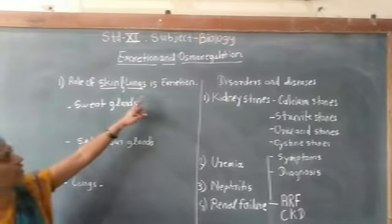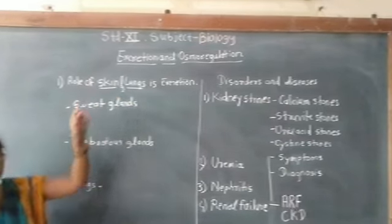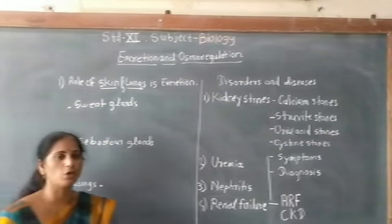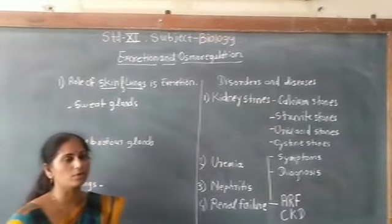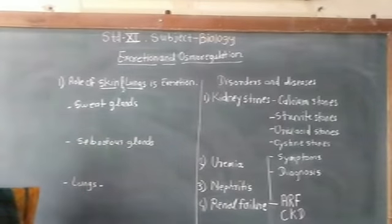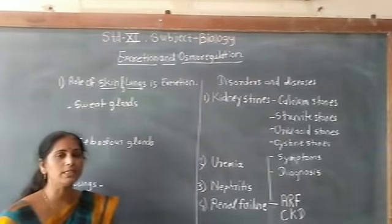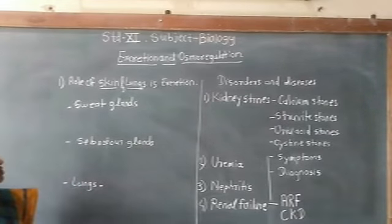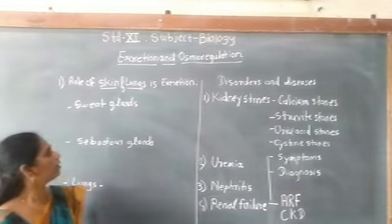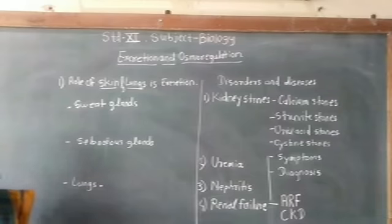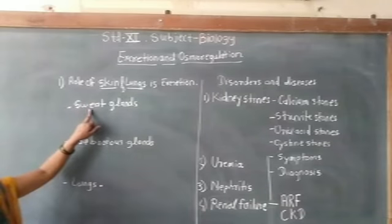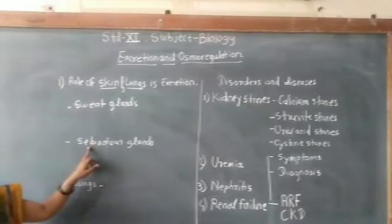The role of skin in excretion: the skin of lower animals shows permeability for different excretory materials such as urea and uric acid. But in the case of higher animals, especially humans, the skin is thick and impermeable to such substances. Therefore, the human skin is only permeable to urea, lactic acid, NaCl, and water.